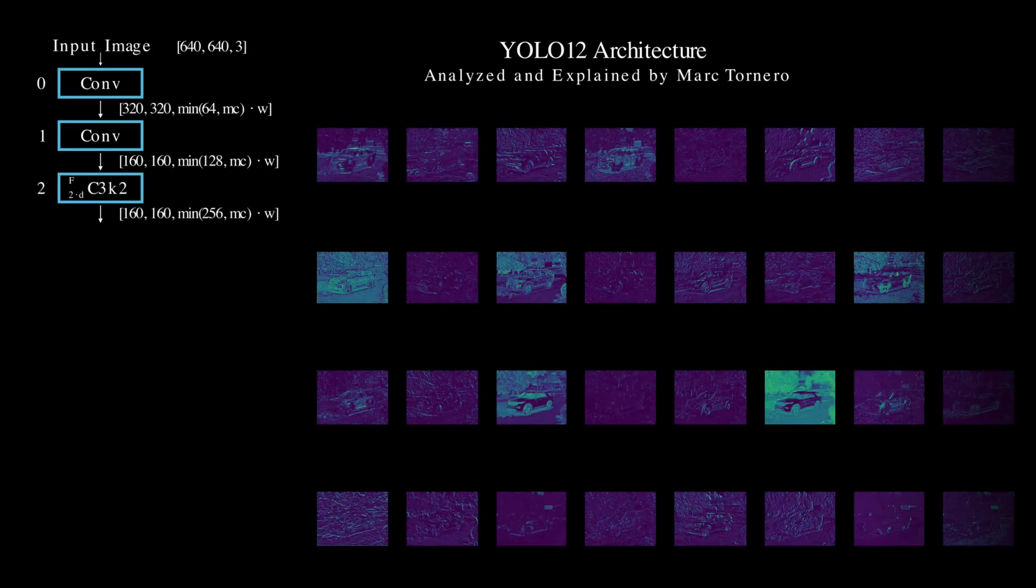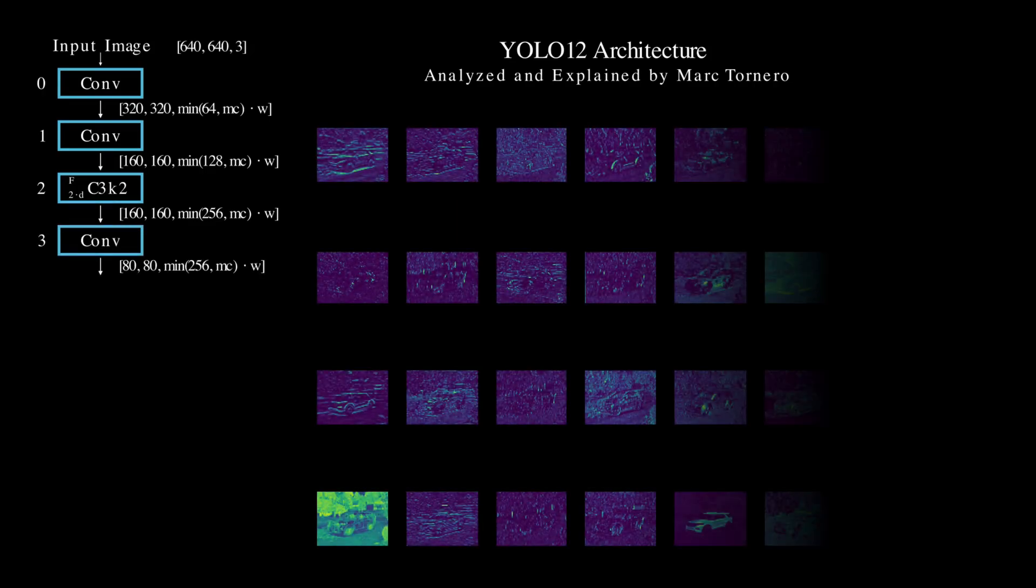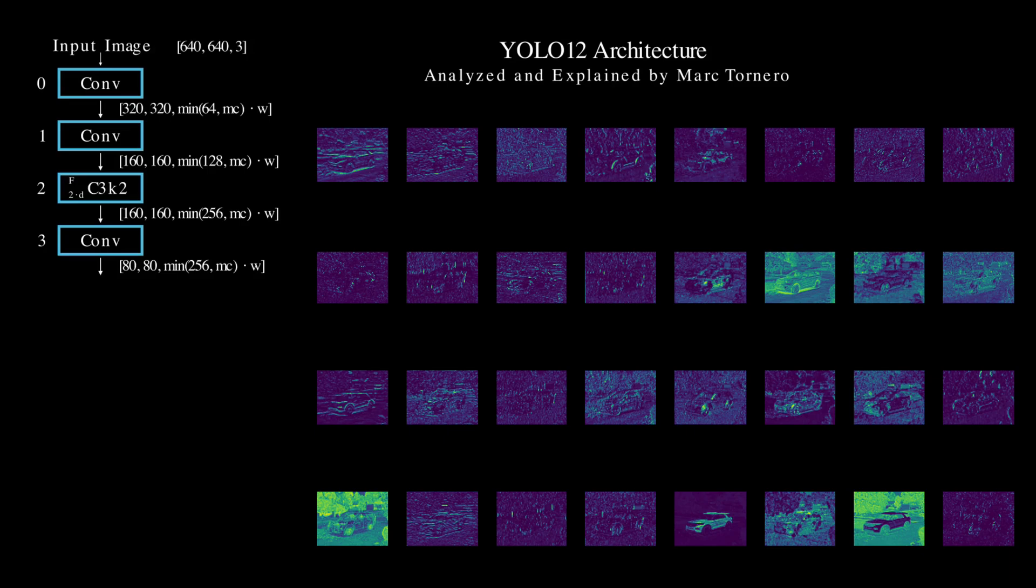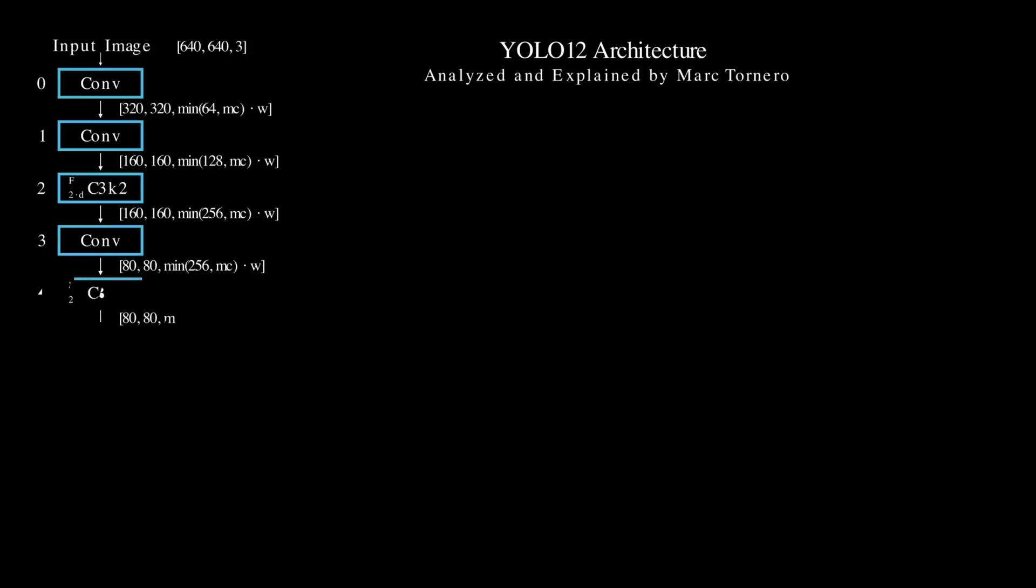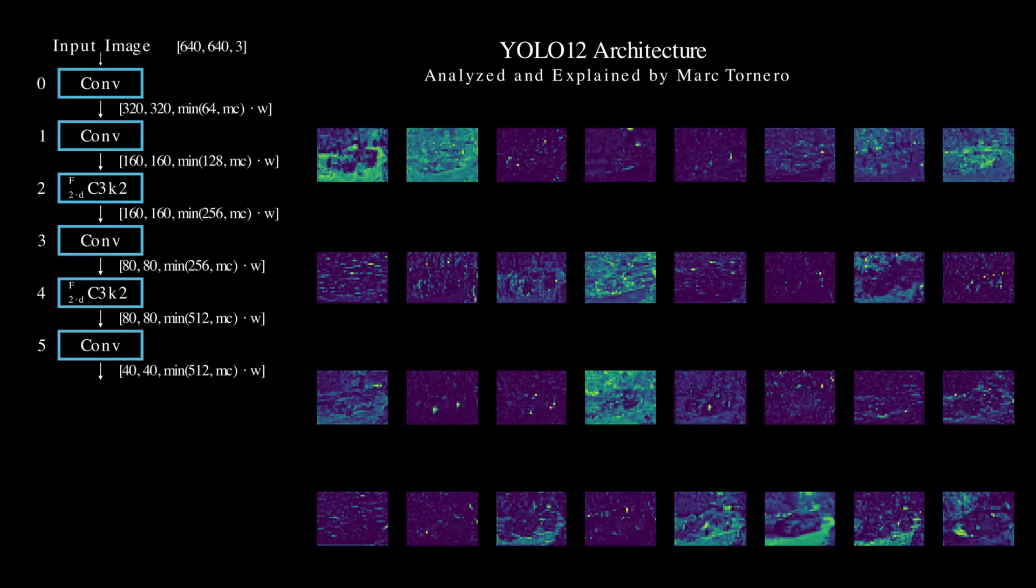This is followed by repeated C3K2 modules, which are blocks that refine feature extraction while maintaining efficiency. These modules emphasize both local and global patterns in the image, creating hierarchical feature maps. Shallow layers capture fine details, while deeper layers focus on broader high-level features.